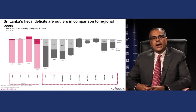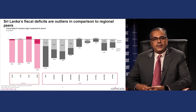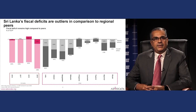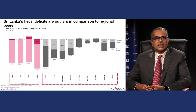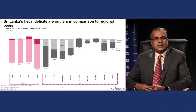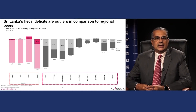Looking at the region in terms of overall balance, Sri Lanka is an outlier — we have posted very large fiscal deficits. Even in periods of trying to consolidate the primary balance, the weight of inherited debt remains. Most regional peers have significantly lower deficits than us, except India.